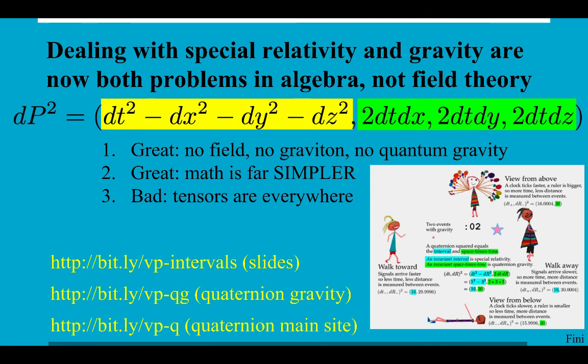So I'm really dealing, my unification is dealing with special relativity and gravity as a problem of algebra, quaternion algebra, and not a field theory. So that's great. No fields, no graviton, no quantum gravity, despite all the papers and outreach on such proposals. It's great because the math is simpler, but it's bad because tensors are everywhere and people don't want to lose their quantum gravity theory jobs.